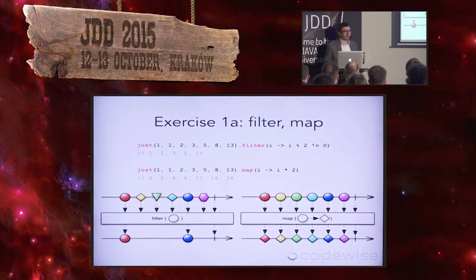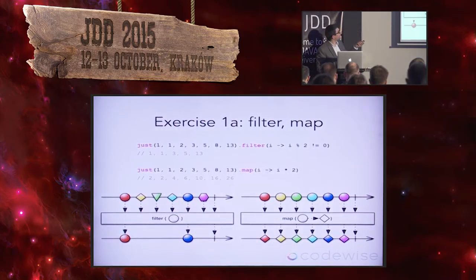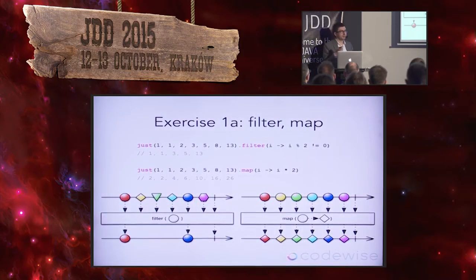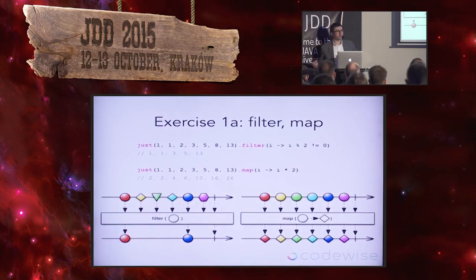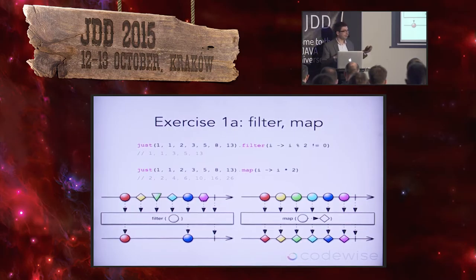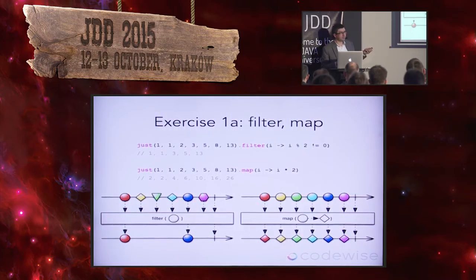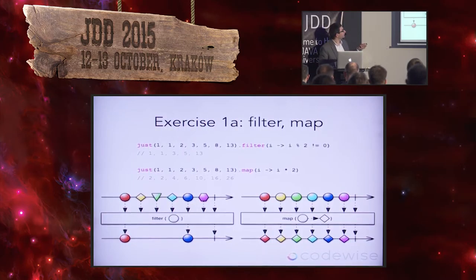Filter and map are the things we discussed earlier. Filter accepts a predicate and every element that satisfies it — where the expression is true — will be allowed to pass. With map, we change something about the element: we get the data, change something, and can change the type. We could return, instead of an integer, some other type so the stream would be of a different type. Here we just multiply it.